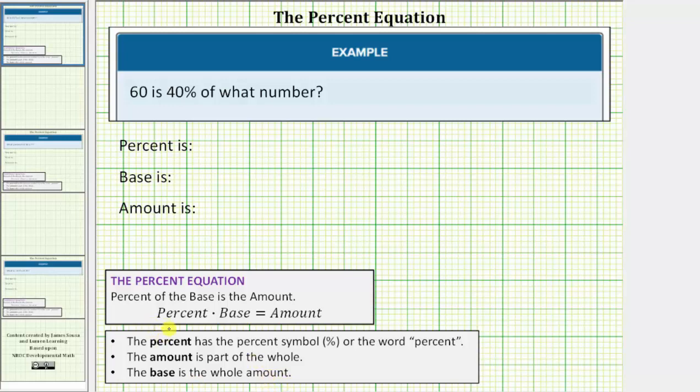Let's identify these three key components from the given question. The question reads, 60 is 40% of what number? Because 60 is 40% of some number, 60 is part of some whole, or some number, and therefore 60 is the amount, part of the whole.